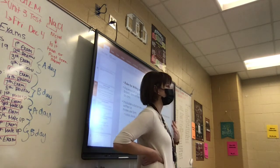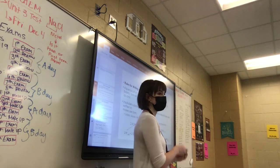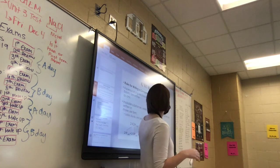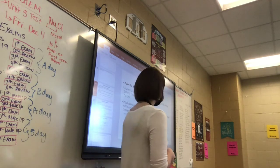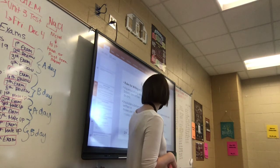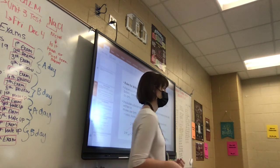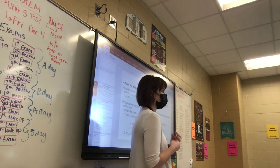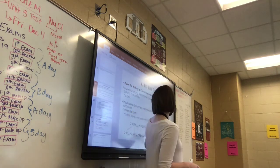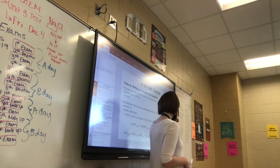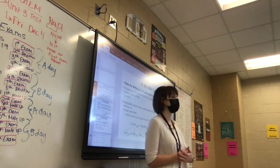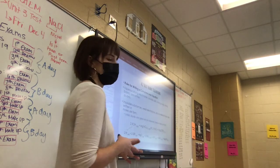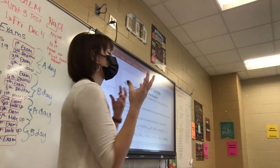In complete and net ionic equations, we separate aqueous compounds into their ions — solids, liquids, and gases are not separated. With three aqueous solutions and one solid, we separate the aqueous ones into ions. You still need a balanced equation with proper coefficients — for example, two nitrates per one magnesium. Magnesium hydroxide is insoluble, so it is not separated.